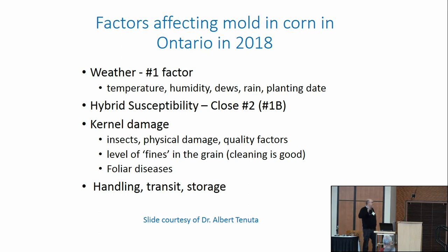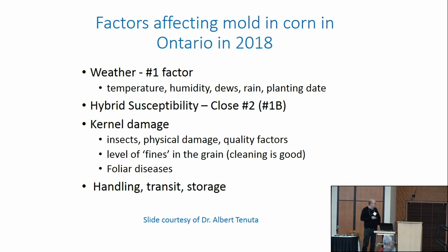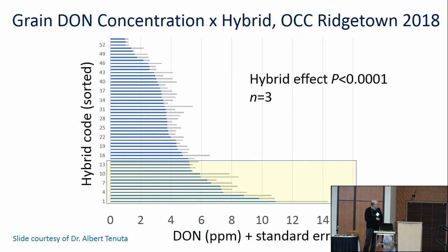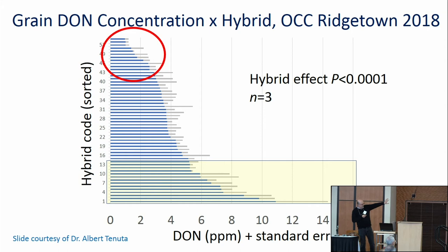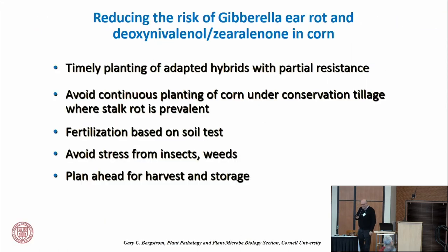And then all kinds of other factors: damage to the kernels, lack of cleaning, how the grain was processed and handled. Ontario data illustrates considerable variation in DON contamination levels among corn hybrids — some generally had much lower levels than others.